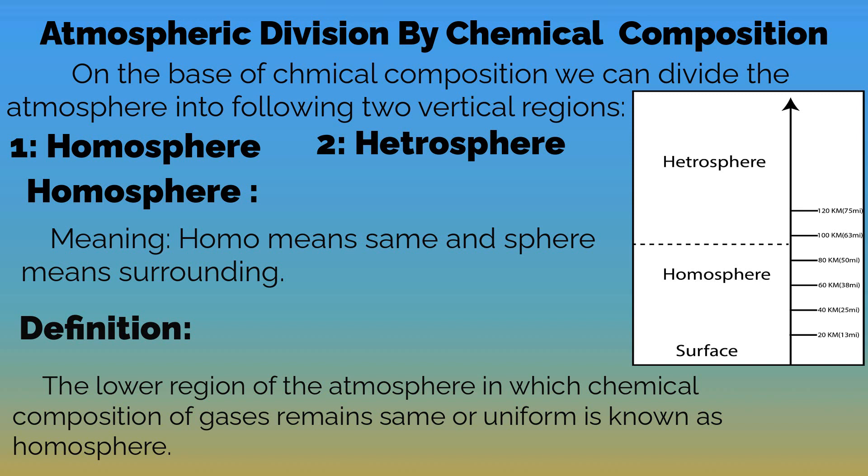In the previous lecture, we discussed that the atmosphere is a mixture of different gases. When we mix two or more things together, we get a mixture. The physical properties of a mixture have two types: homogeneous and heterogeneous.